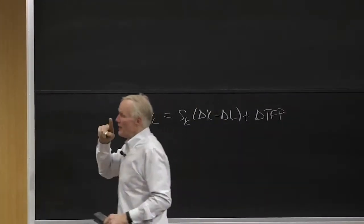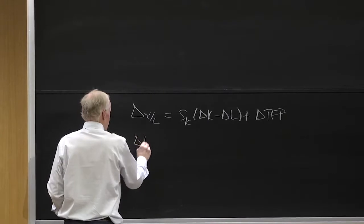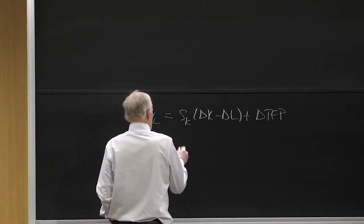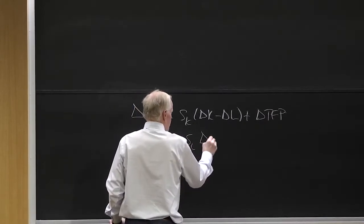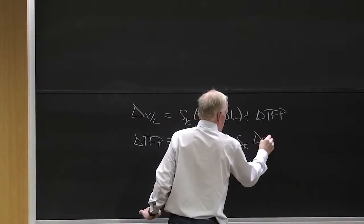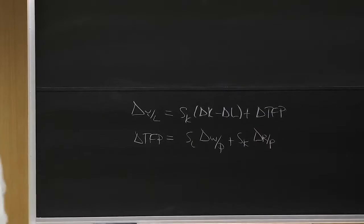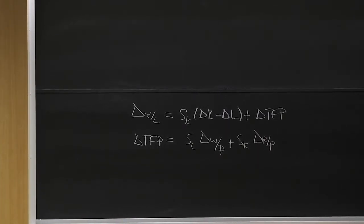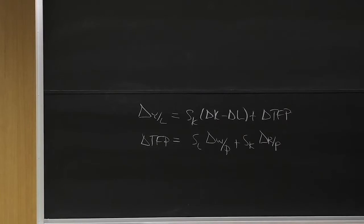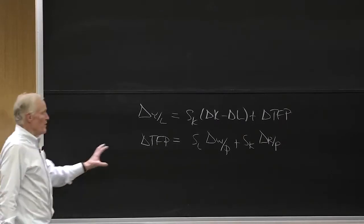My second equation I want to rearrange slightly differently. Delta TFP equals SL delta W over P plus SK delta R over P. That is, all I'm going to do is take this delta P and distribute it between these two pieces. So I'm going to bring the delta P, I'm going to put an SL of it with this one, an SK of it with that one. Remember, those add up to one. That's cool. And I can have change in the real wage. Now this is a really important equation.